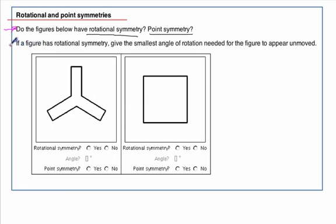It also asks that if a figure has rotational symmetry, give the smallest angle of rotation needed for the figure to appear unmoved. All right, so that means we've got two things to check, rotational symmetry and point symmetry, for two different shapes. Two questions for each. If one of them is yes, we need to enter an angle.